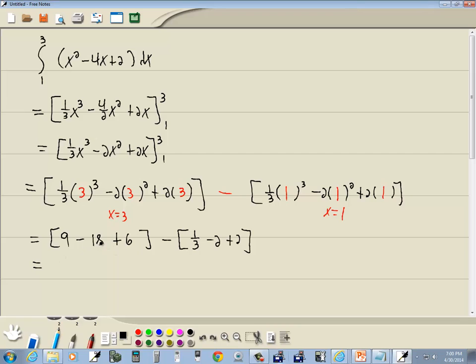9 minus 18 is negative 9, plus 6 is negative 3. Minus 2 plus 2 drops away, so we've got minus 1/3. This gives us negative 3 times 3 is negative 9, plus the negative 1 gives us negative 10/3. And that's our answer.